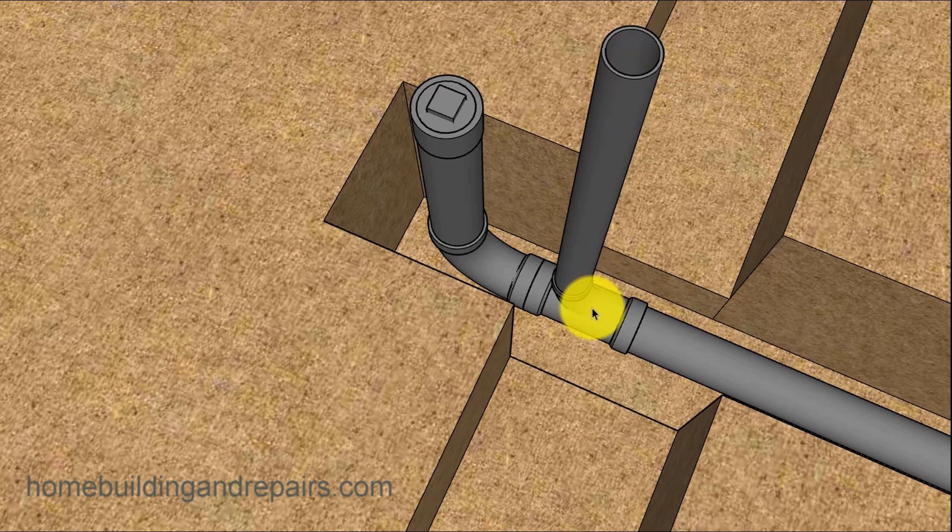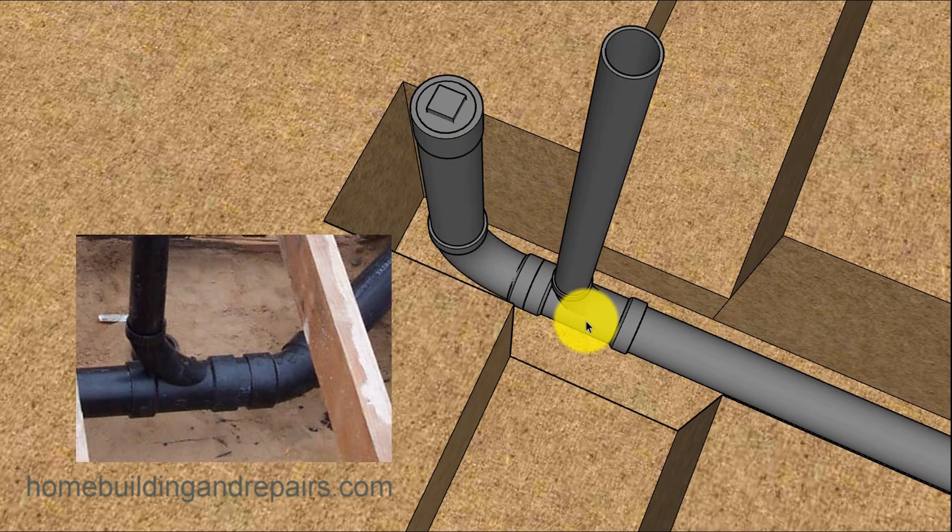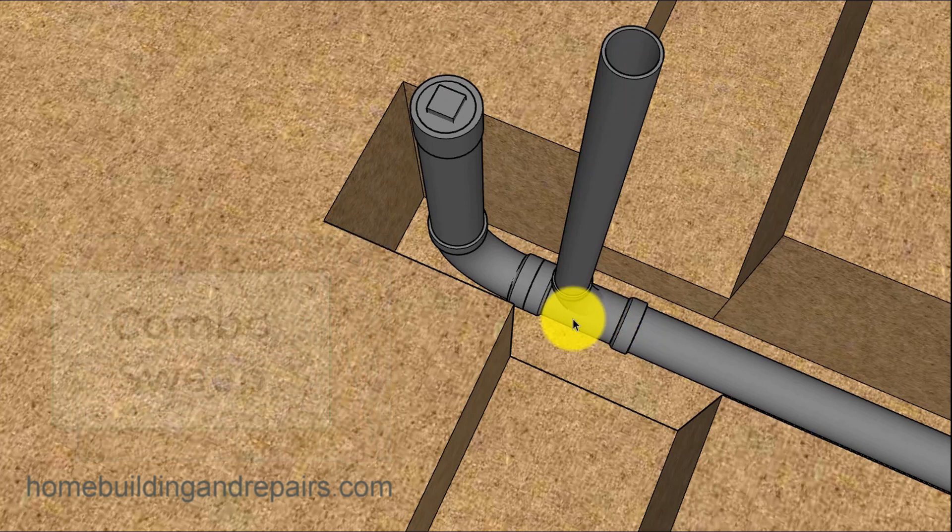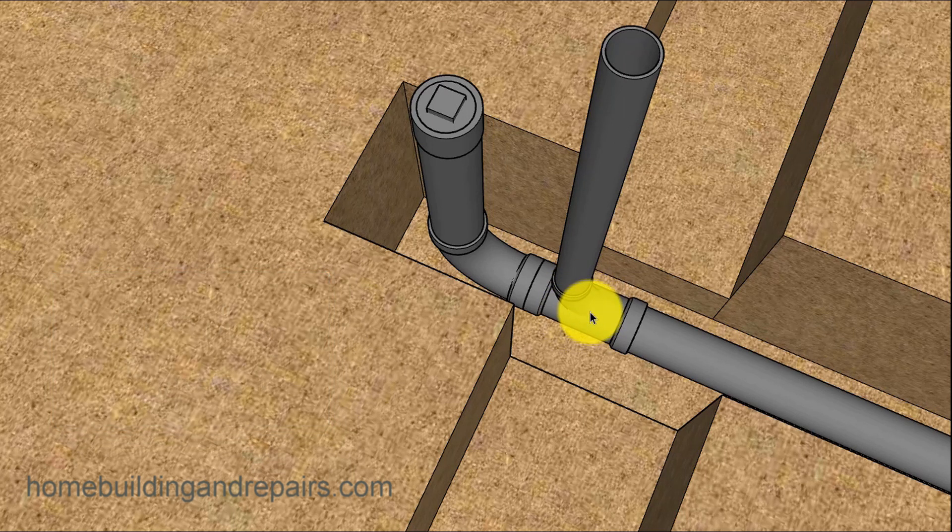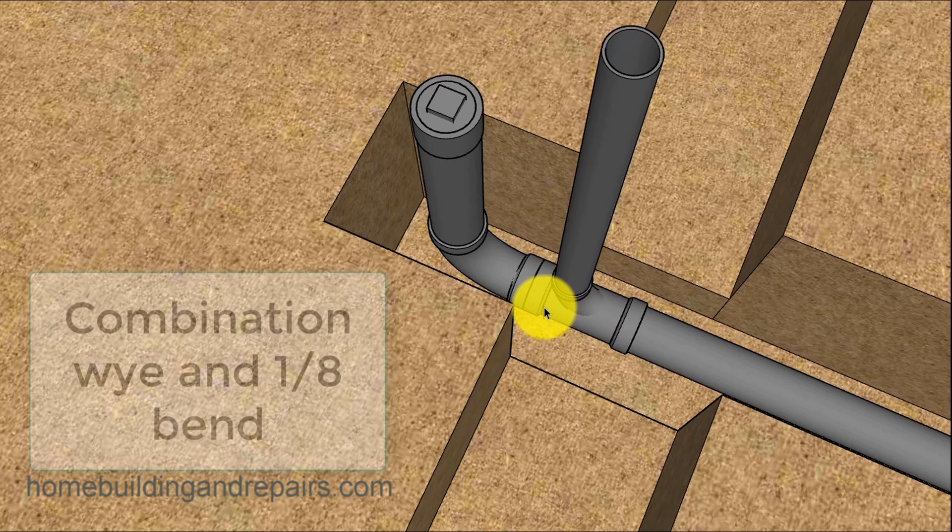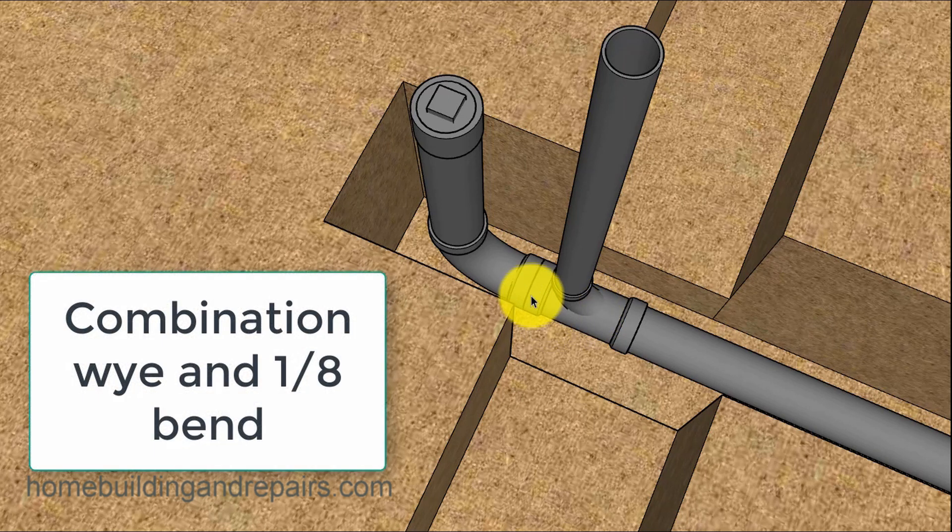And again, there will be more of that in the future video. So I also want to go through some of the parts that I'm going to be using here, but also point out that these parts might be referred to as different names in your area. So this right here, I used to always call it a combo sweep. So the combo sweep, but that doesn't necessarily mean that's what it's going to be called in your area. I did look it up online and found it referred to as a combination Y and eighth bend. So that might be helpful.